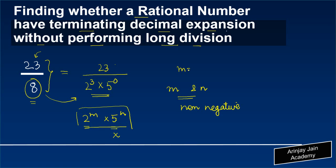In our case, m is equal to 3 which is a non-negative integer and n is equal to 0 which is also a non-negative integer. So effectively what we have is that both m and n are non-negative integers, and this expansion can be written as 2 to the power 3 into 5 to the power 0.